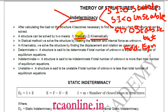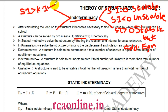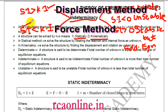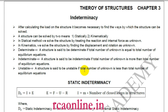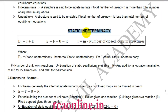To decide which method to apply, we compare static and kinematic indeterminacy. If static indeterminacy is greater than kinematic indeterminacy, I will apply the method in which unknowns are degrees of freedom. If static indeterminacy is less than kinematic indeterminacy, I will apply the method in which forces are the unknowns. We will discuss these in coming videos.